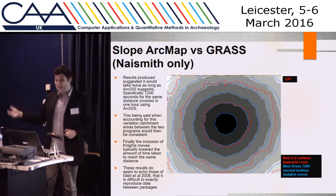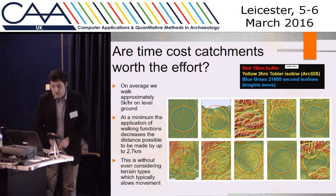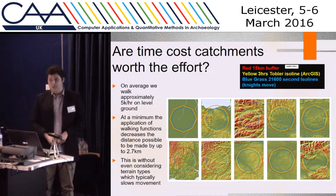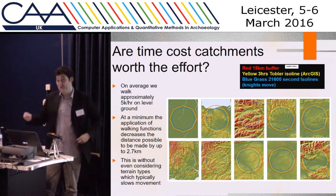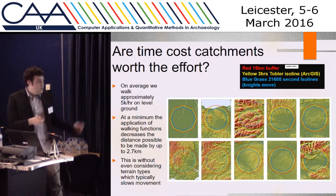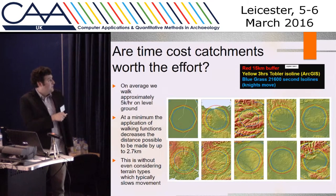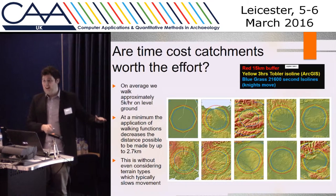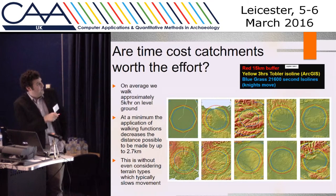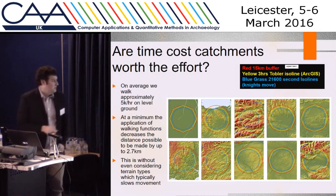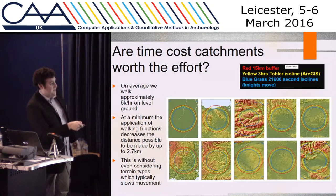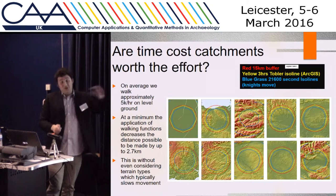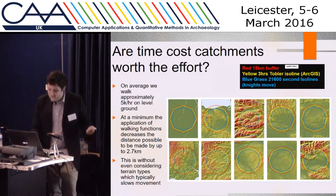At this point, seeing all methods produce relatively similar lines with only small variation, I wondered whether cost surfaces are worth the effort — should I just redraw Euclidean circles? This slide proves you should be doing cost surfaces. Comparing three-hour Euclidean buffers at five kilometers per hour against Tobler in ArcGIS and the knight's move in GRASS, all cost surface results fall well within the Euclidean line. The difference is typically about 2.7 kilometers — you don't go as far once you account for slope.